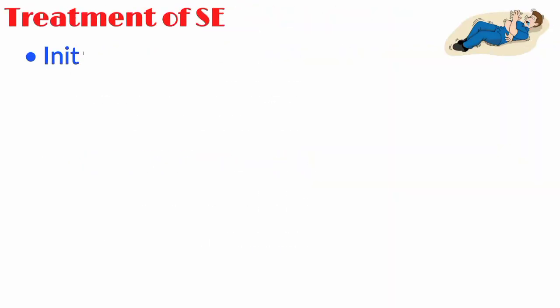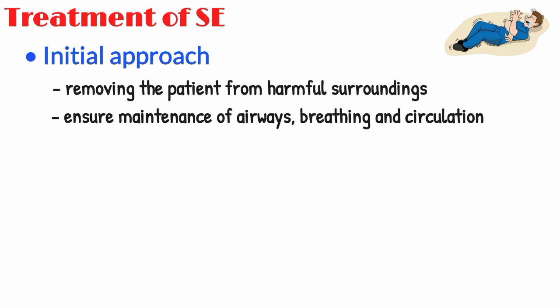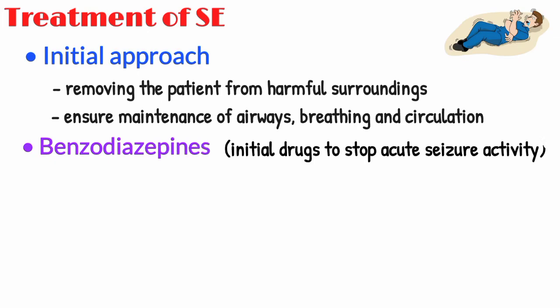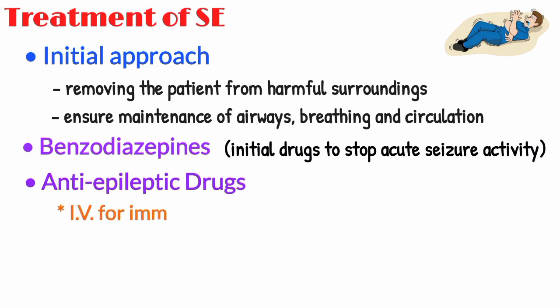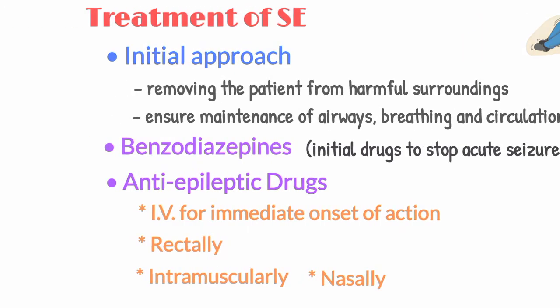Regarding treatment of status epilepticus, the initial approach involves removing the patient from harmful surroundings and ensuring maintenance of airways, breathing, and circulation. Benzodiazepines are the preferred initial drugs to stop acute seizure activity, followed by anti-epileptic drugs. Medications are given intravenously for immediate onset of action, but if IV access is not available, selected medications may be given rectally, intramuscularly, or nasally.